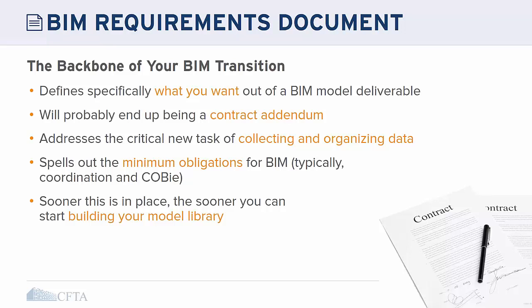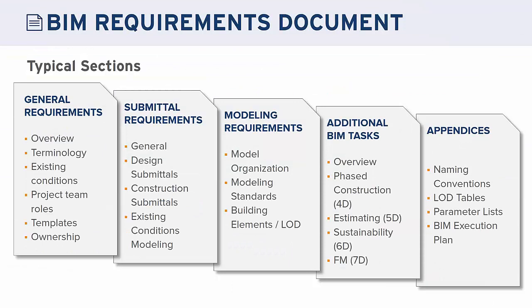The BIM requirements document is your overarching requirements, and it may not be pertinent on all projects, but all projects will refer back to it. For example, if I'm doing a small interior renovation, I may not need the section on how I expect roofs to be modeled — but that needs to be defined for other projects. Typically, the document is broken into sections, and every owner should have their own customized version rather than simply downloading another owner's document.